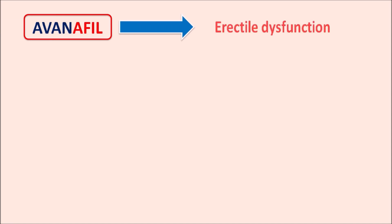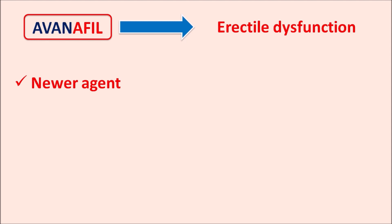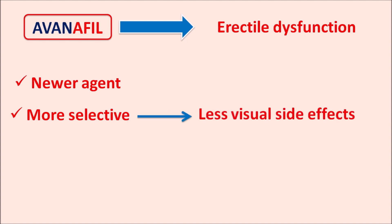Avanafil, as a phosphodiesterase type 5 inhibitor, is indicated for the treatment of erectile dysfunction. This drug has a few advantages compared to previous drugs. It is newer compared to the other drugs and is more selective towards the inhibition of phosphodiesterase type 5 enzyme. Because of this selectivity, avanafil has fewer visual side effects, which are related to inhibition of phosphodiesterase type 6 enzyme. Another advantage is its faster onset of action.